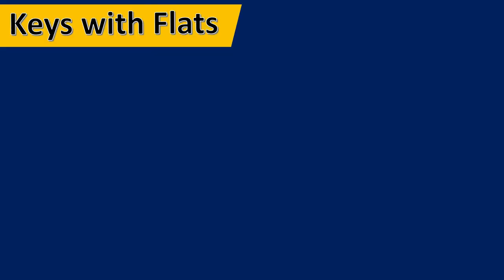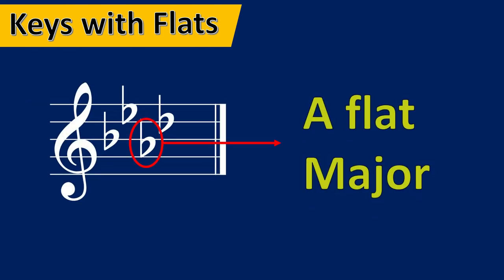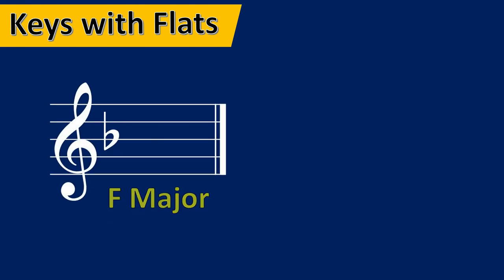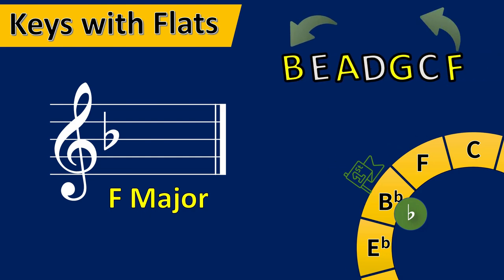For key signatures with flats, look at the penultimate flat — that gives you the name of the major key. For instance, with four flats — B, E, A, D — the penultimate flat is A, so the key is A flat major. The one exception is F major, which has only one flat, so there is no penultimate flat. Simply memorize that the single flat B flat means F major.